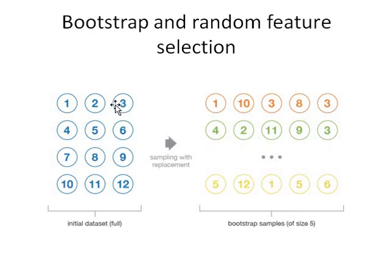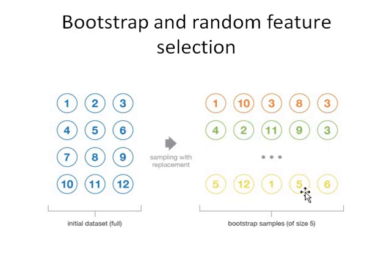Let's see what Bootstrap Sampling and Random Feature Selection are in Random Forest. Let's assume we have 12 rows, that is 12 data points, in our dataset, and this dataset contains 5 variables. We can make multiple Bootstrap Samples — the first, second, third, and further Bootstrap Samples — from a single dataset. This sampling is with replacement, that is, rows with replacement.